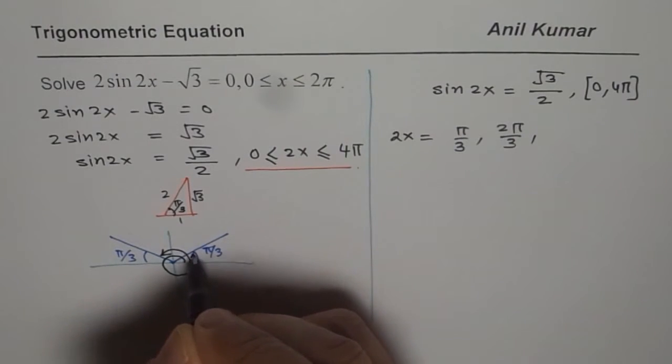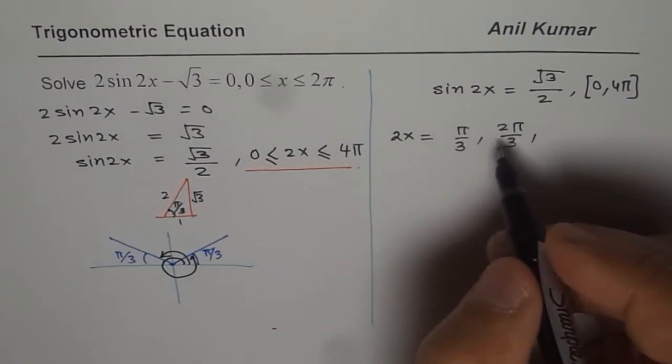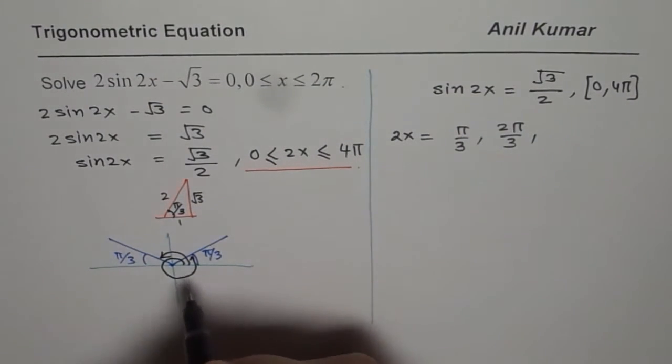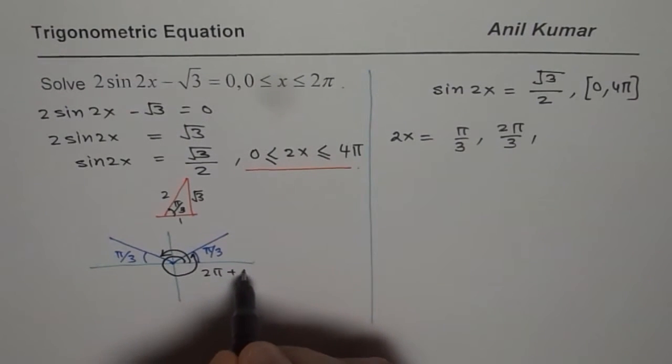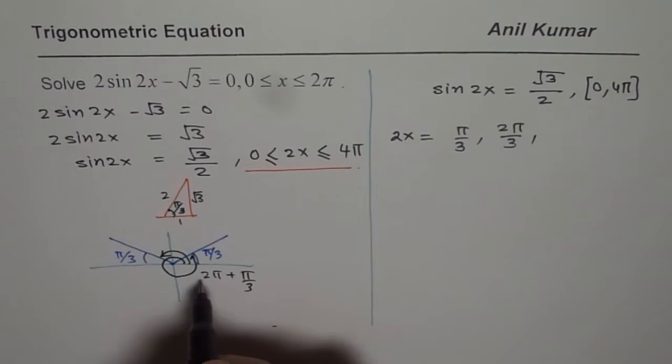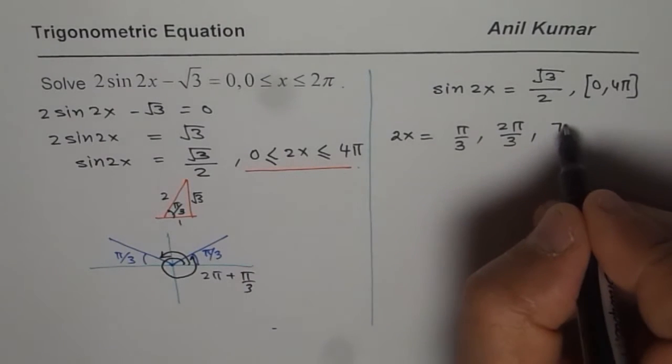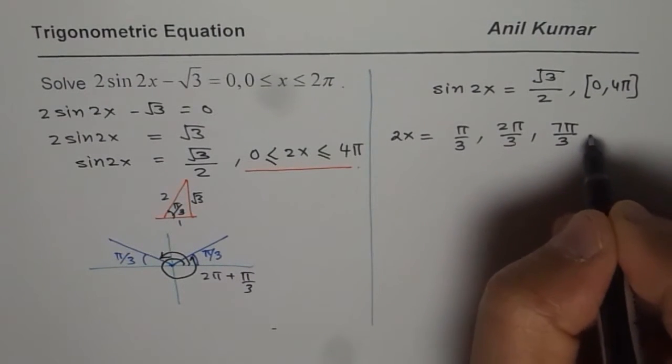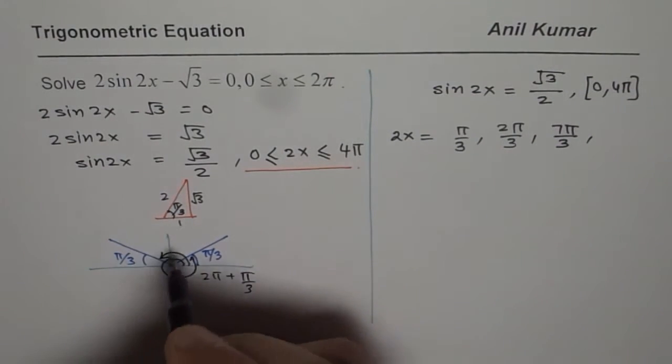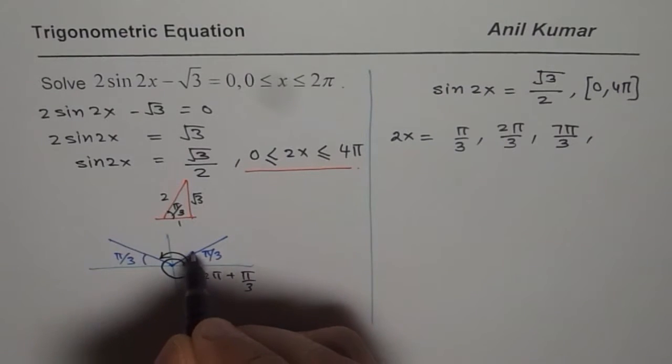2π plus π by 3, so 3 times 2 is 6 plus 1 is 7, so you get 7π by 3. And then the other one will be more than this.